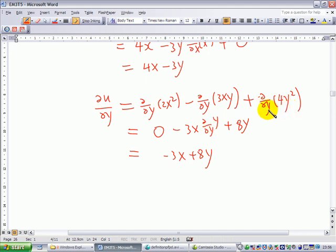The last term, differentiate 4y squared with respect to y, you get 8y. So in the end, du dy is minus 3x plus 8y.